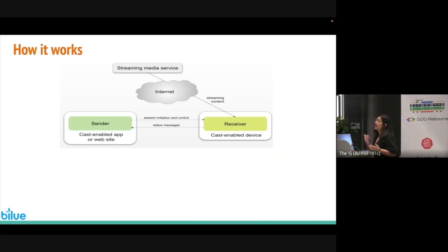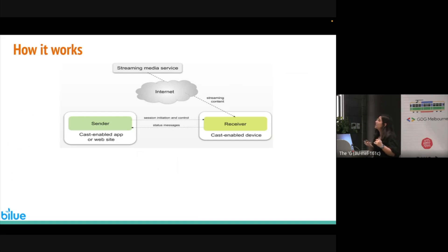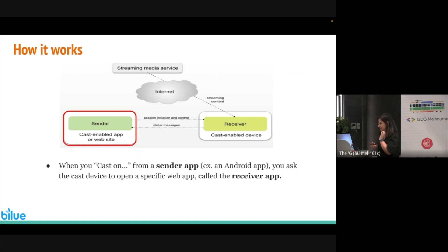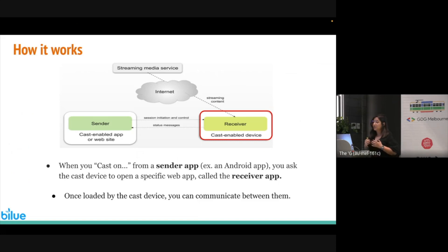It's important to know how casting works. The receiver — the cast device — doesn't directly read messages from the sender app, which is your mobile app, but from a web app. So when you cast from a sender app like your Android app, you ask the cast device to open a specific web app that is our receiver app. Once this receiver app is loaded by the cast device, you can communicate between sender and receiver and send data between them.